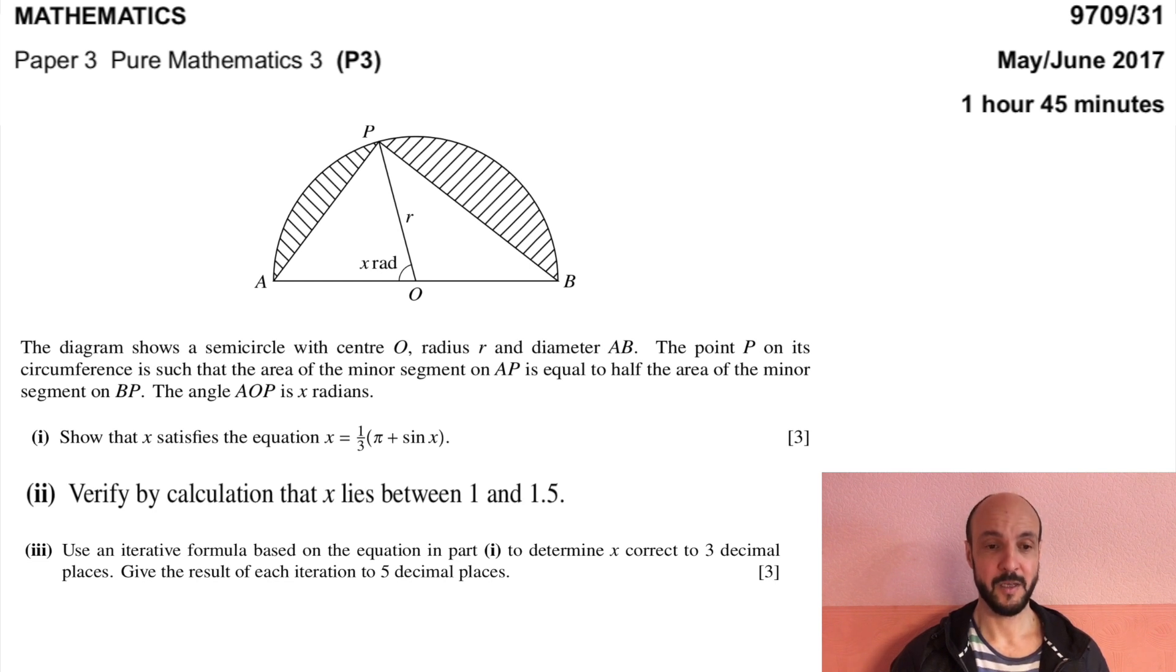Part 1: Show that X satisfies the equation X equals a third of pi plus sine X. Part 2: Verify by calculation that X lies between 1 and 1.5. Part 3: Use an iterative formula based on the equation in part 1 to determine X correct to three decimal places. Give the result of each iteration to five decimal places.